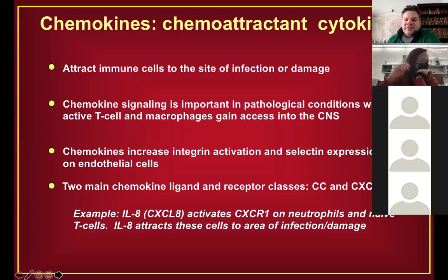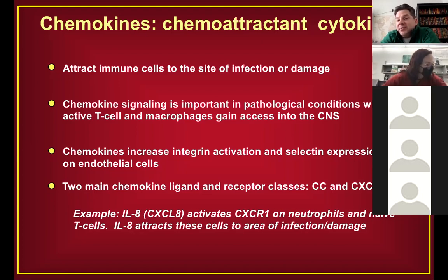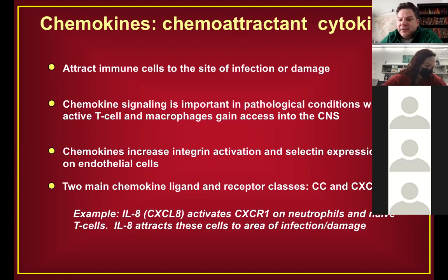There are two main classes of chemokine ligands and receptors: the CXC (cysteine-X-cysteine) and CC classes. The X stands for any amino acid — so the cysteine pattern stays the same but the middle residue can vary. For example, it could be cysteine-tyrosine-cysteine or cysteine-serine-cysteine — many different chemokines are possible.